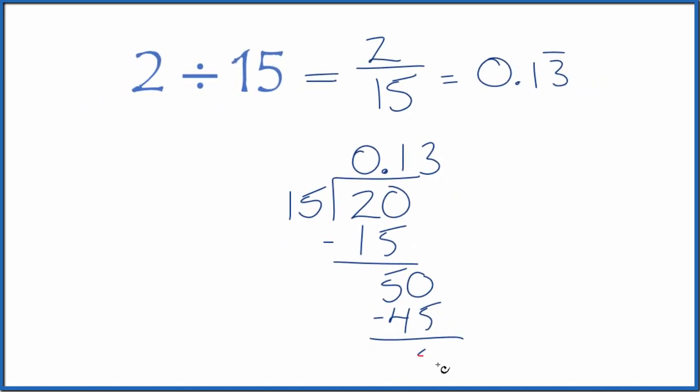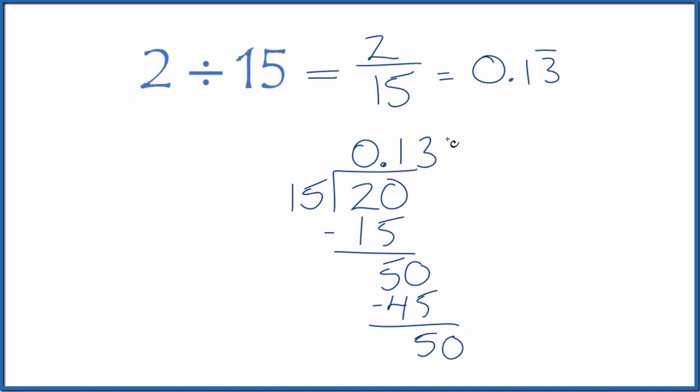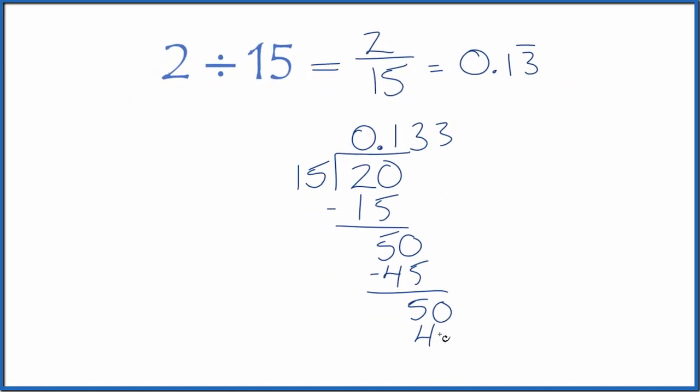We subtract, we get 5. Call it 50 and 3 times 15, 45. You subtract and you get 5. And you can see what happens. We're just going to keep getting 3 here.